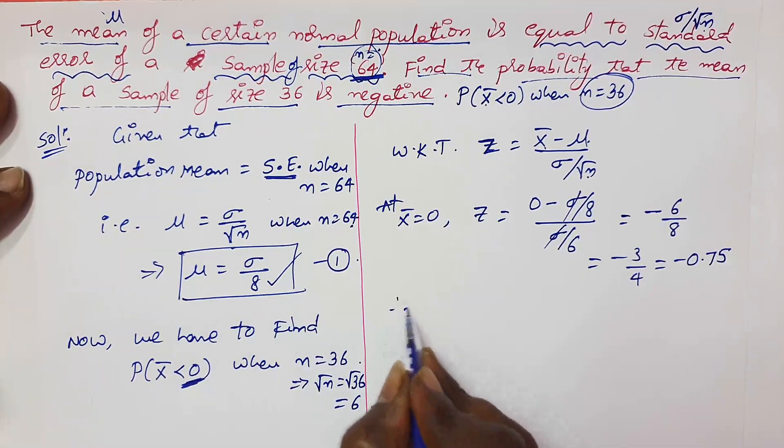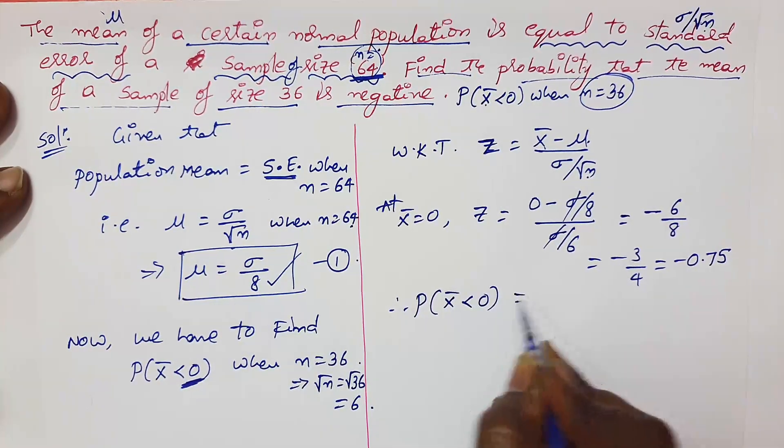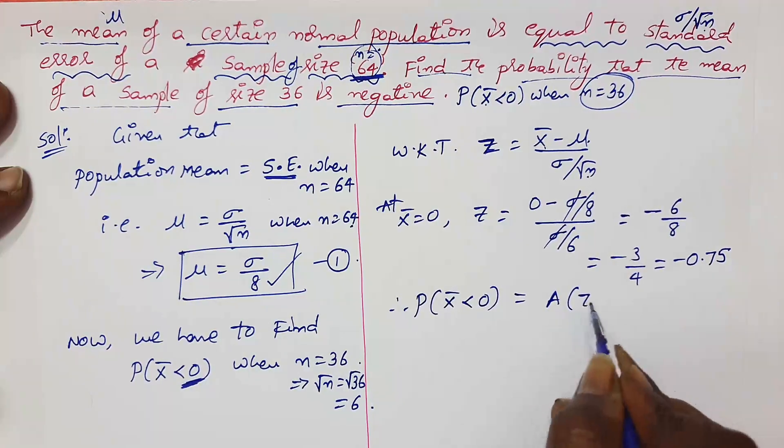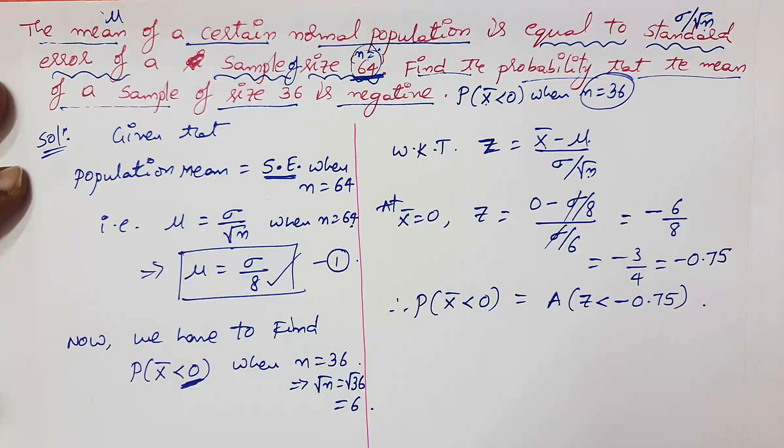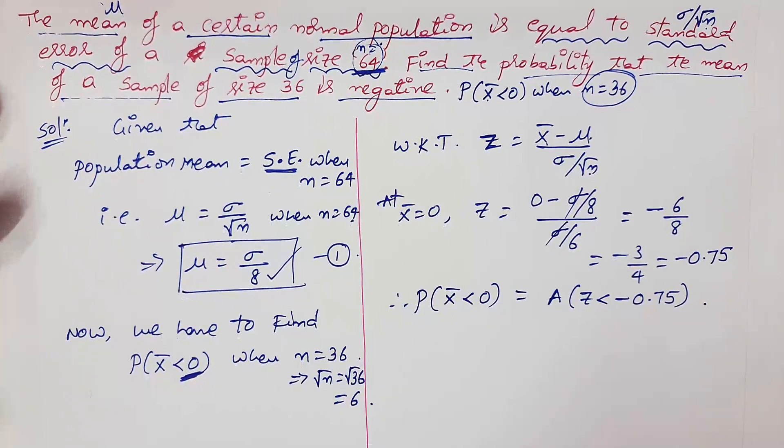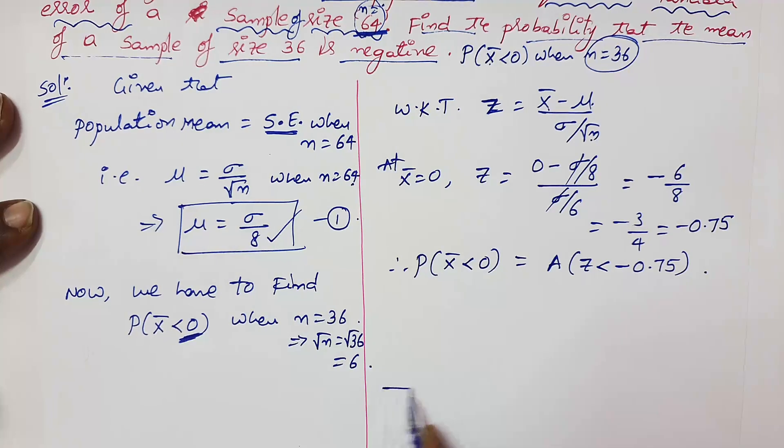So the required probability becomes probability of x bar is negative, which is area of z less than minus 0.75. So to complete the problem, it is enough to find out the area which is less than 0.75 under the normal curve.